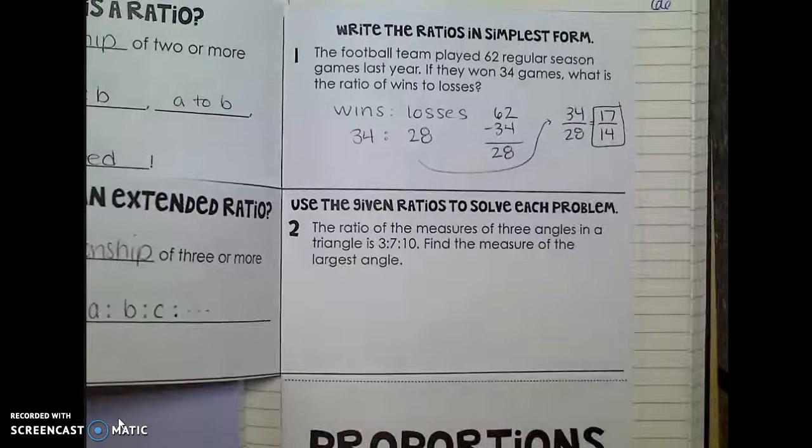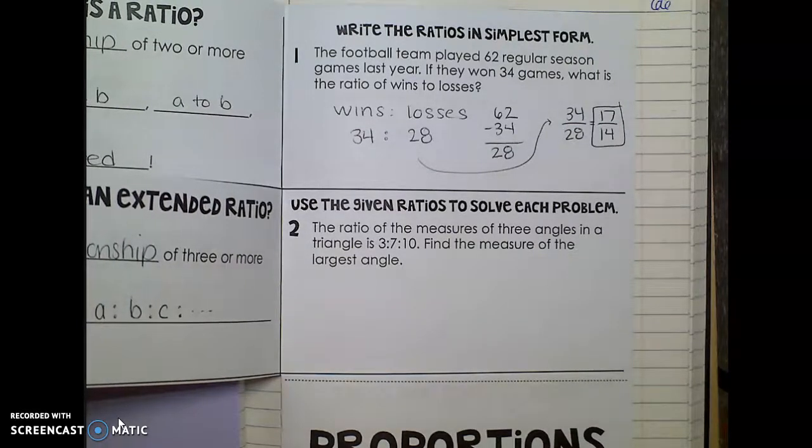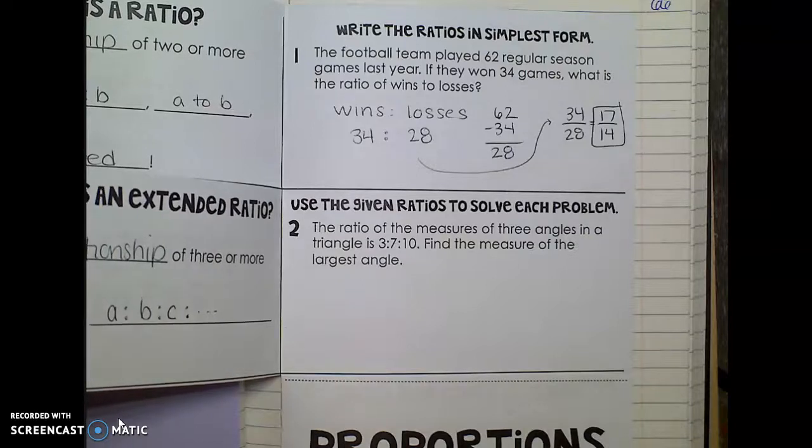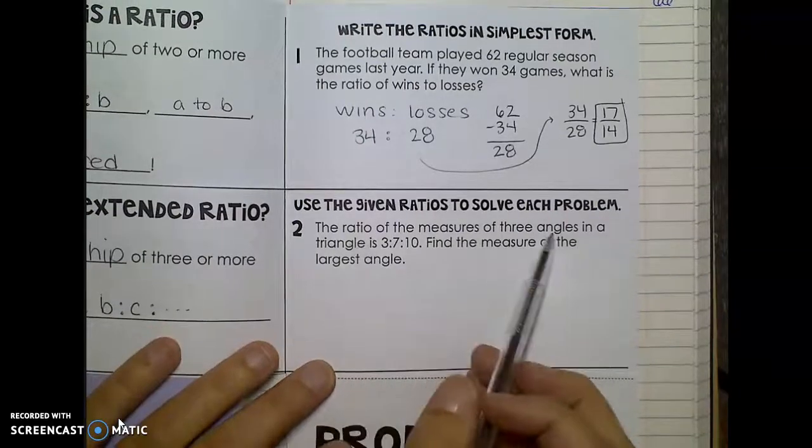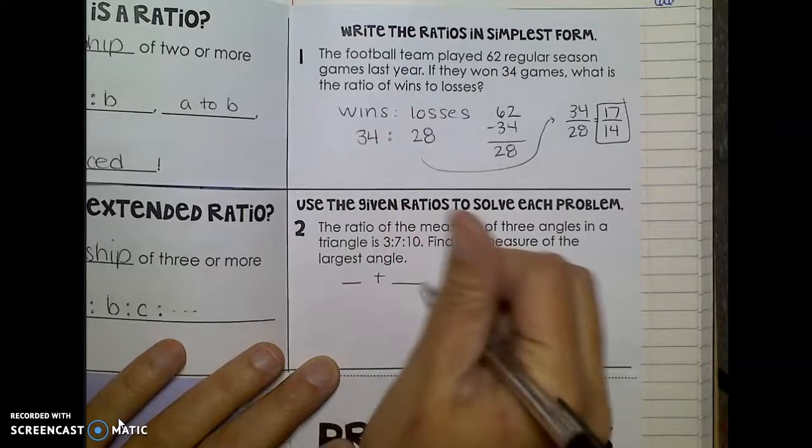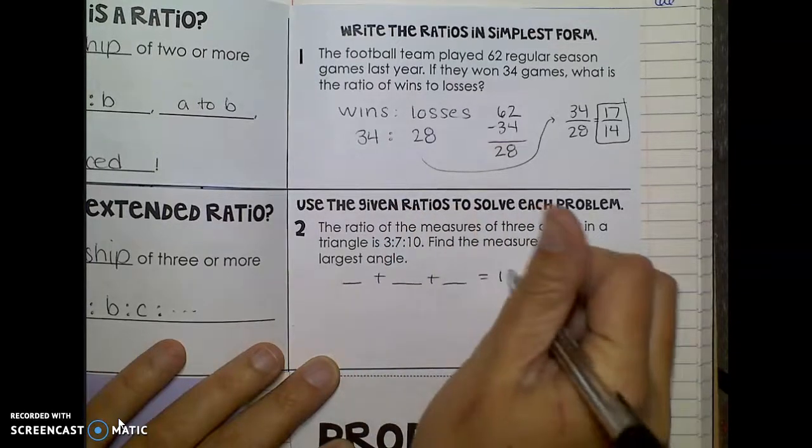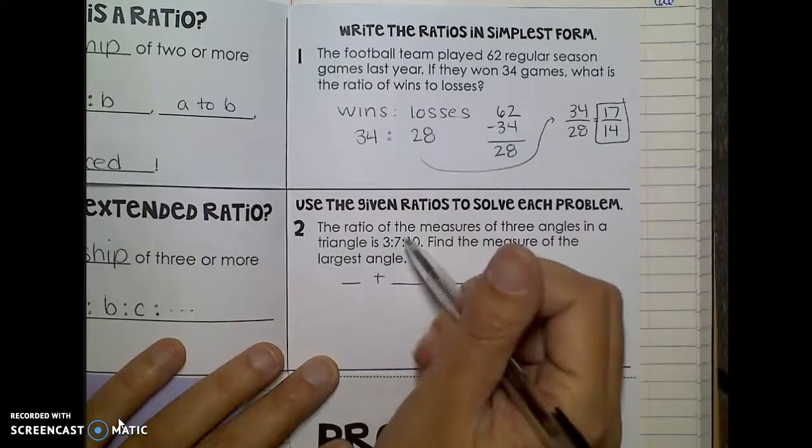So an example of that might be: the ratio of the measures of three angles in a triangle is 3 to 7 to 10. Find the measures of the largest angle. So what I know about a triangle here and its angles is that the angles always add up to equal 180, and they're in ratio to each other 3 to 7 to 10.